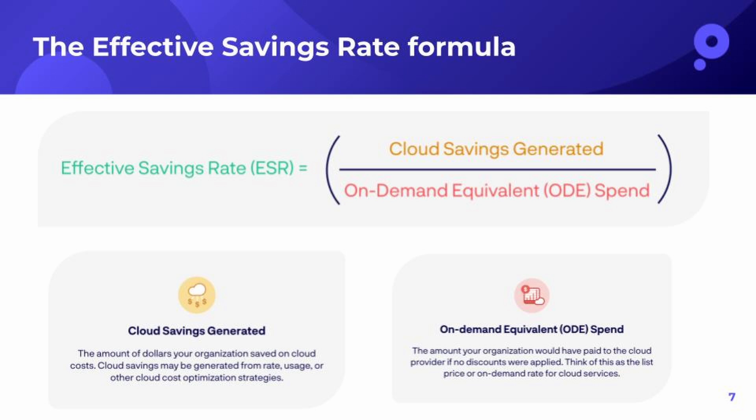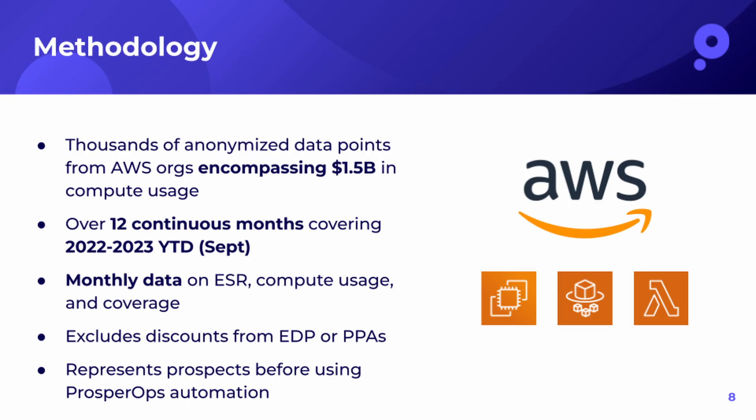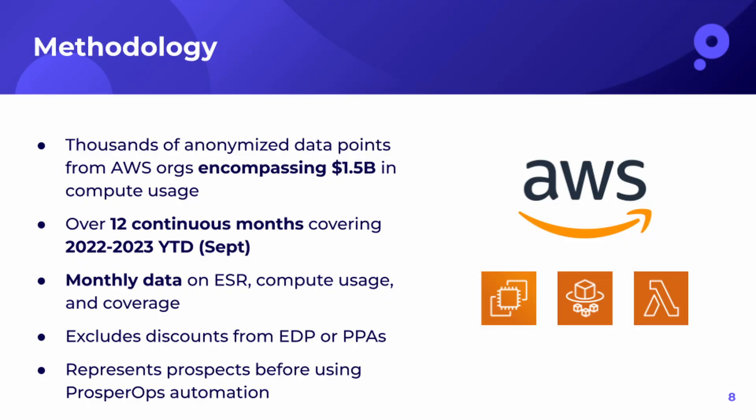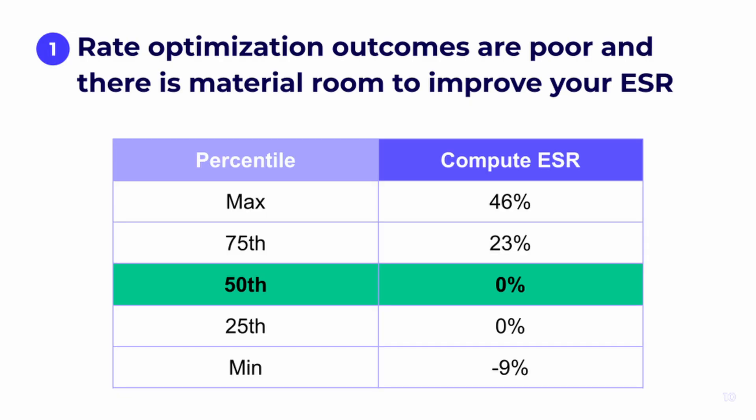To understand your rate optimization strategy performance, you need to first calculate your ESR and then understand how you compare against peers. We've done the hard work by analyzing thousands of anonymized AWS org data points over 12 continuous months from 2022 to 2023 year-to-date, encompassing 1.5 billion dollars of compute usage. We looked at monthly ESR, usage, and coverage, specifically for compute including EC2, Lambda, and Fargate, using prospect data representing companies before using ProsperOps — a true baseline measure.